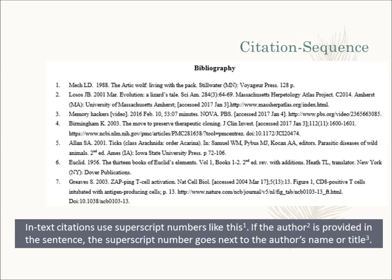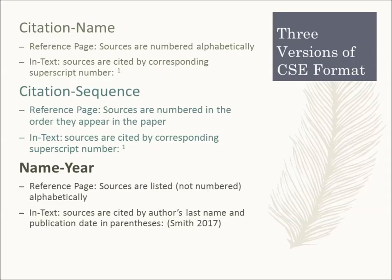Citation sequence is the next option. This is similar to citation name in that sources are numbered on the reference page and the corresponding superscript number appears in text as the source citation. The difference is the sources aren't numbered alphabetically, but in the order they are used in the paper — whichever source appears first in the paper is source 1. For both citation name and citation sequence, superscript numbers appear either at the end of a sentence or where an author's name or title of a source are used within the sentence.